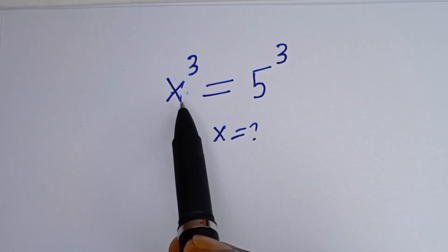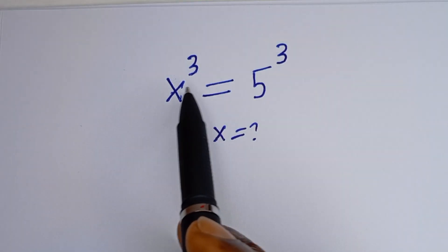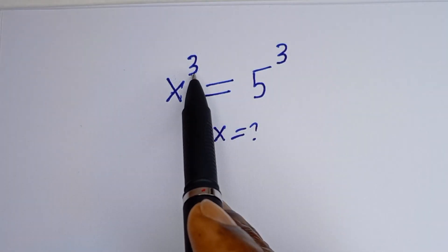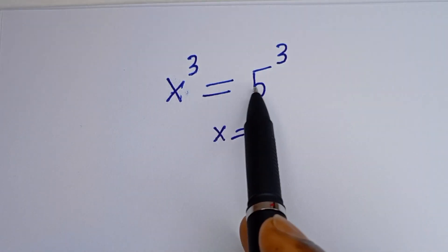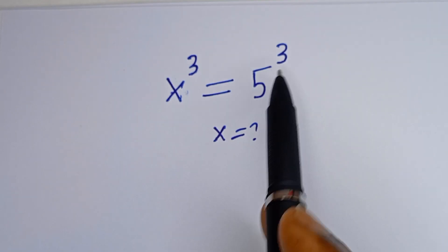Hello. How to solve for S in this equation: S to the power of 3 is equal to 5 to the power of 3.